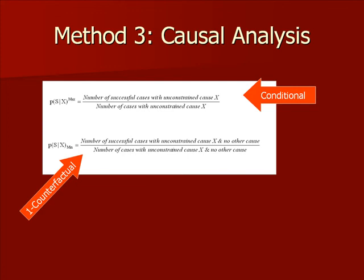In the third step, we reduce the sample size again, but this time we drop days in which other causes are also present. We repeat our calculation in this reduced sample. This is a minimum probability of exercise due to this cause, as in this method of calculation there are no other reasons for why the exercise occurred.